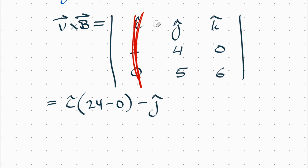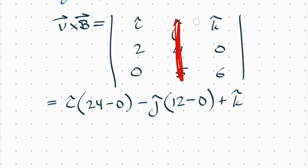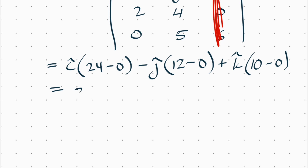For the j component, subtract the result: 2 times 6 minus 0 times 0 equals 12, so the j component is negative 12. For the k component, compute 5 times 2 minus 4 times 0, which equals 10. So v cross B equals 24i minus 12j plus 10k.